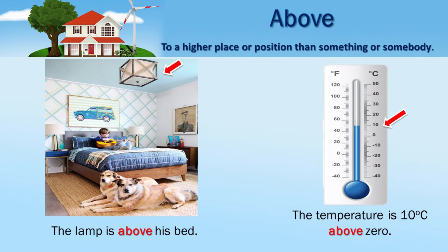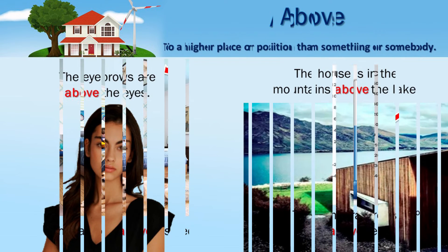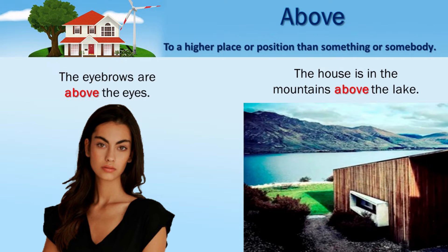Above: to a higher place or position than something or somebody. The lamp is above his bed. The temperature is 10 Celsius above zero. The eyebrows are above the eyes. The house is in the mountains above the lake.